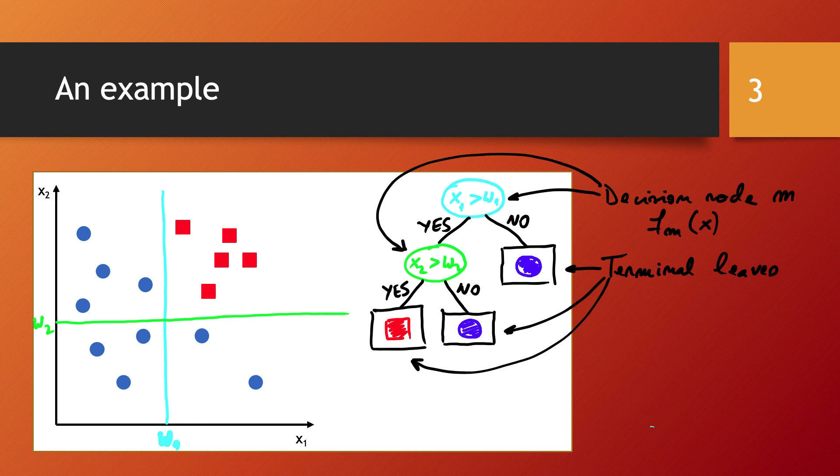And so with decision trees, we are given the general type of test functions, and based on the training data sample, the algorithm is going to build the optimal decision tree, meaning that it's going to select the decision nodes, how many nodes, the specifics of their test functions, and it's also going to choose the leaf nodes and their labels.